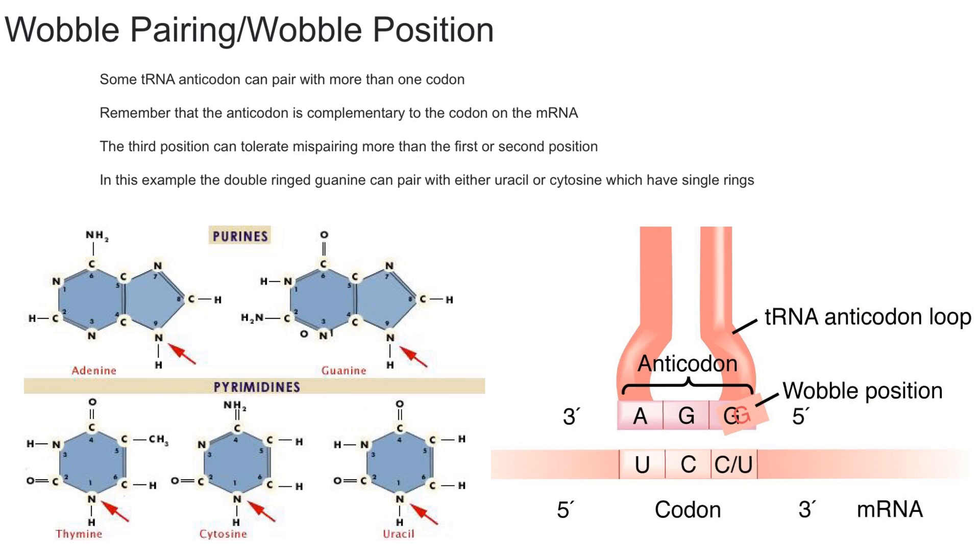Back to this example, you can see that the guanine is able to pair with the cytosine or uracil, and the guanine is double ring and the cytosine and uracil is single ring. That pretty much is simply the wobble position.